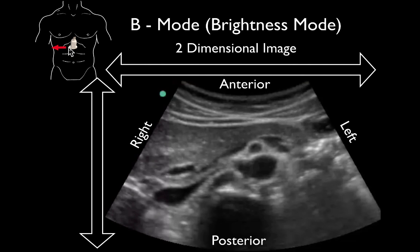A couple of easy ways to orient ourselves: we want to see where our probe marker is pointed. On the probe there will be a probe marker, and in this picture we can see it is pointed towards the right. That probe marker correlates with the indicator on screen — those two always correlate. Wherever your probe marker is pointed is where the indicator is on the patient. In this case, we can see the patient's right, and directly opposite is the patient's left. Our x-axis goes from right to left across the screen.